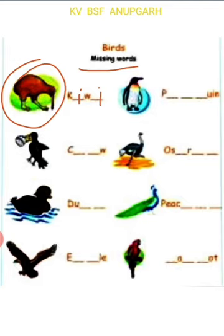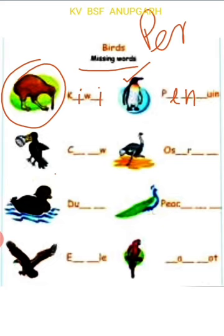Come on, next bird. Which bird is this? Yes. It's penguin. Penguin is a bird that cannot fly but swims in water. Write the spelling: penguin — P-E-N-G-U-I-N. Many children used 'pen' instead of 'pen' — be careful in the future. Next alphabet is G.